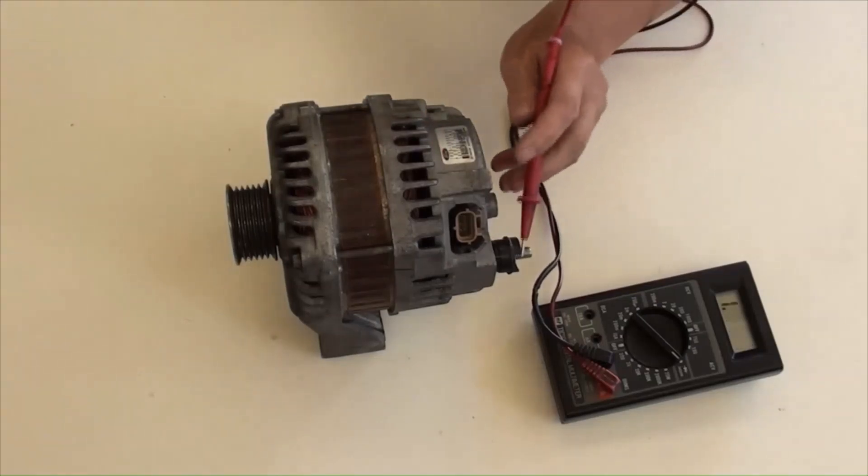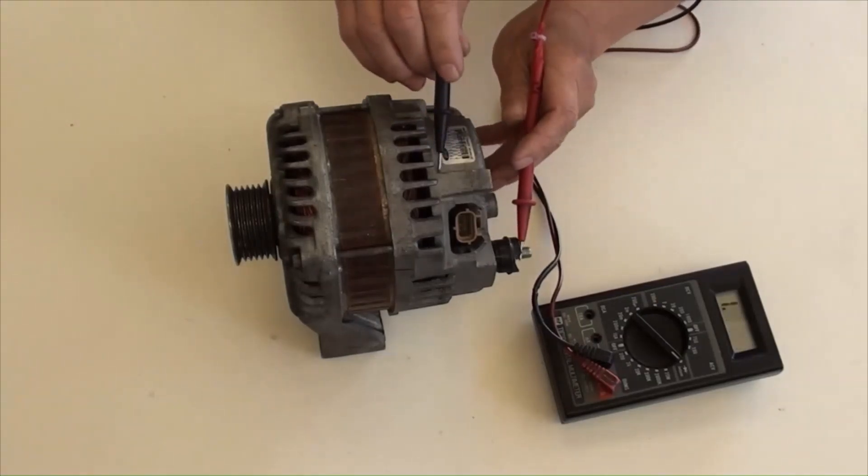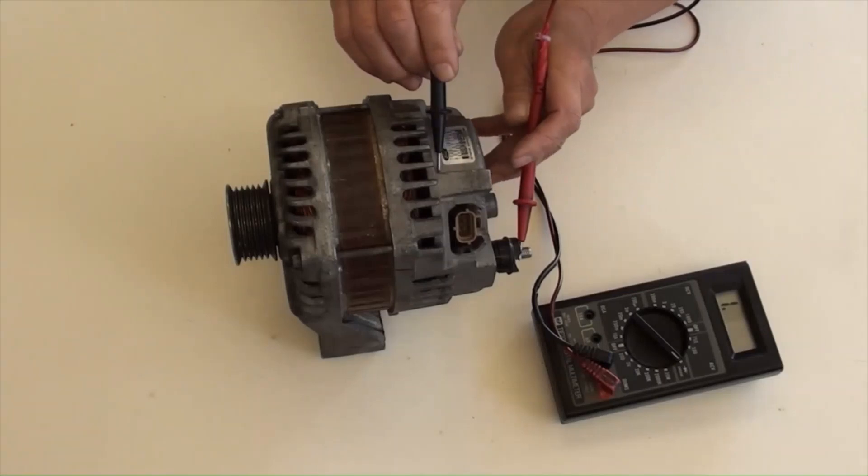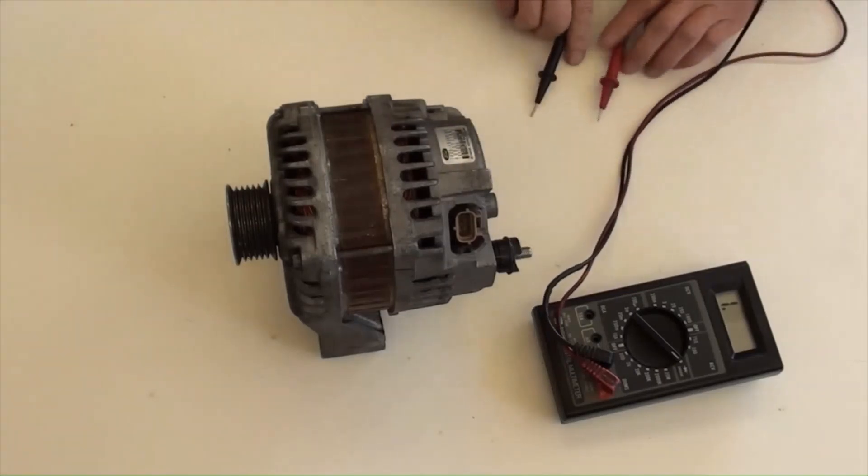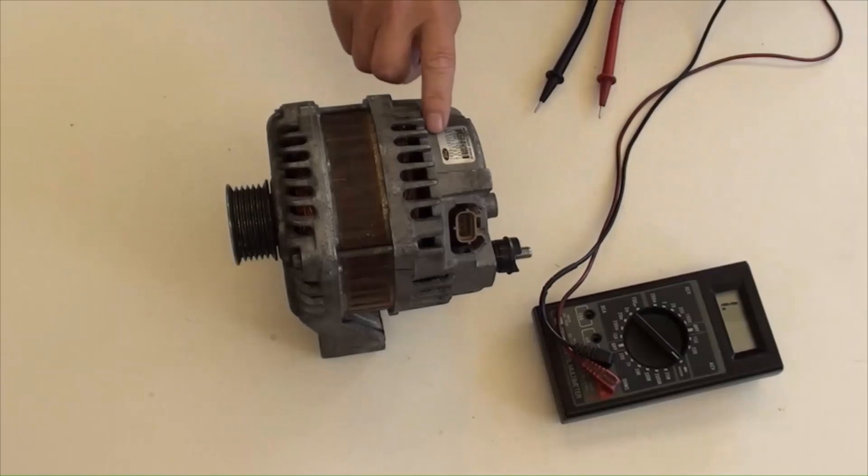Doing the way around by meter's probes. And no continuing reading, and that is good. This has confirmed the alternator's diodes for its rectifier are in good shape.